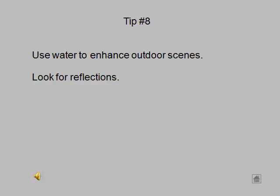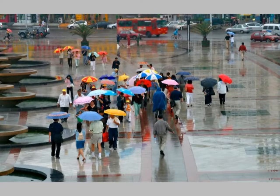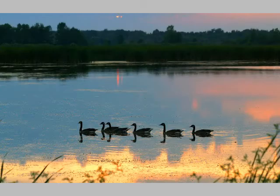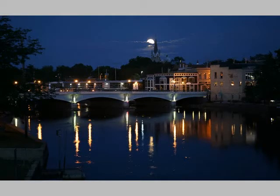Tip number eight: use water to enhance outdoor scenes. Look for reflections. In this scene, without the water, it would be completely boring. In this umbrella scene, taken in China, the reflections on the sidewalk make the picture. It's a rainy day, but it's a good day for photography. The reflections of these geese at sunset are almost geometric. The light reflecting in the water helps make what I think is a good picture. In this scene, the lights on the river make Fort Atkinson, Wisconsin look almost exotic. Of course, the moon behind the clouds also helps.